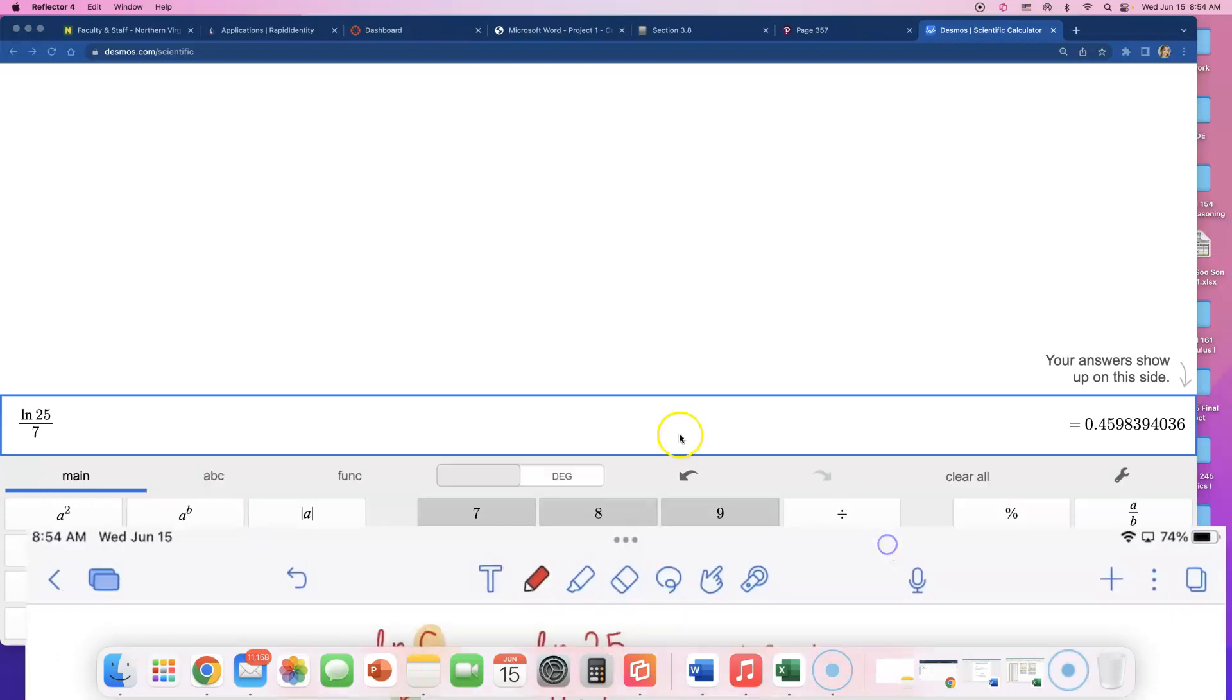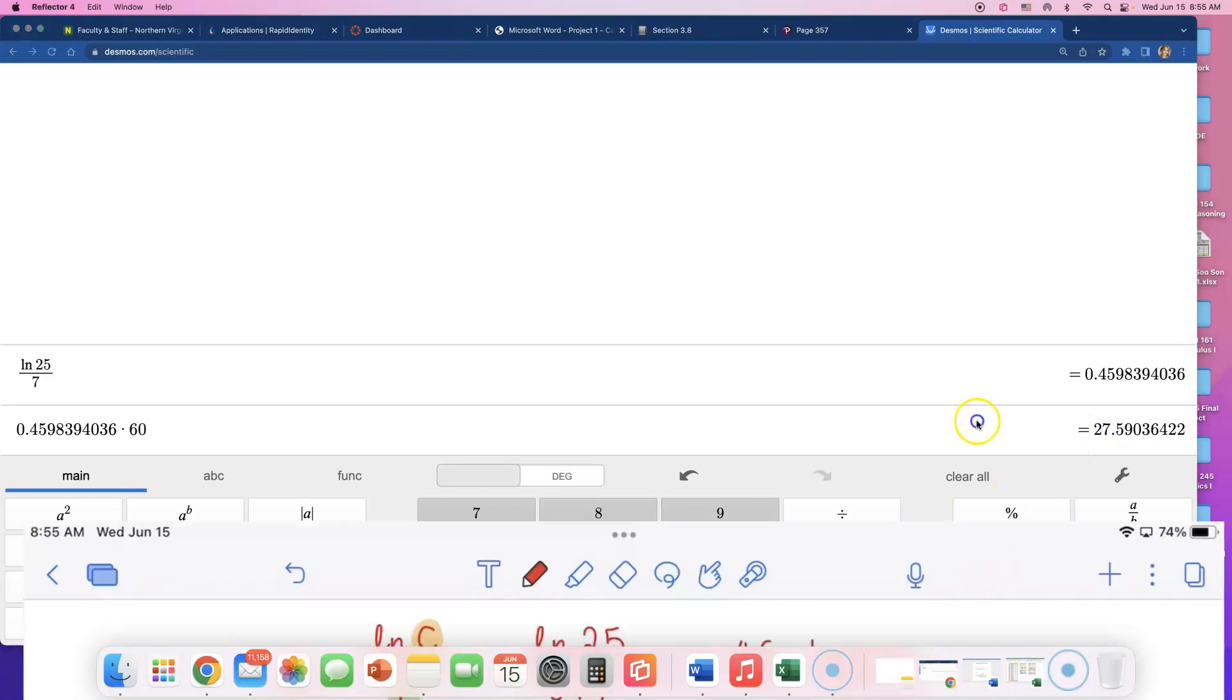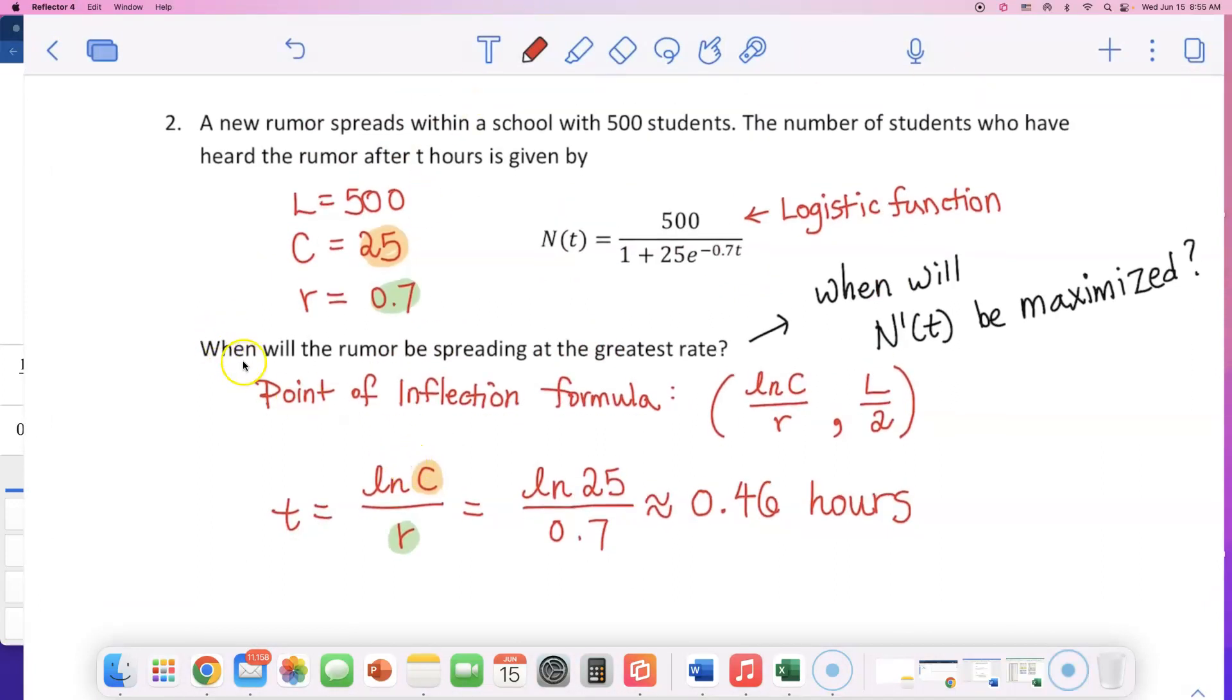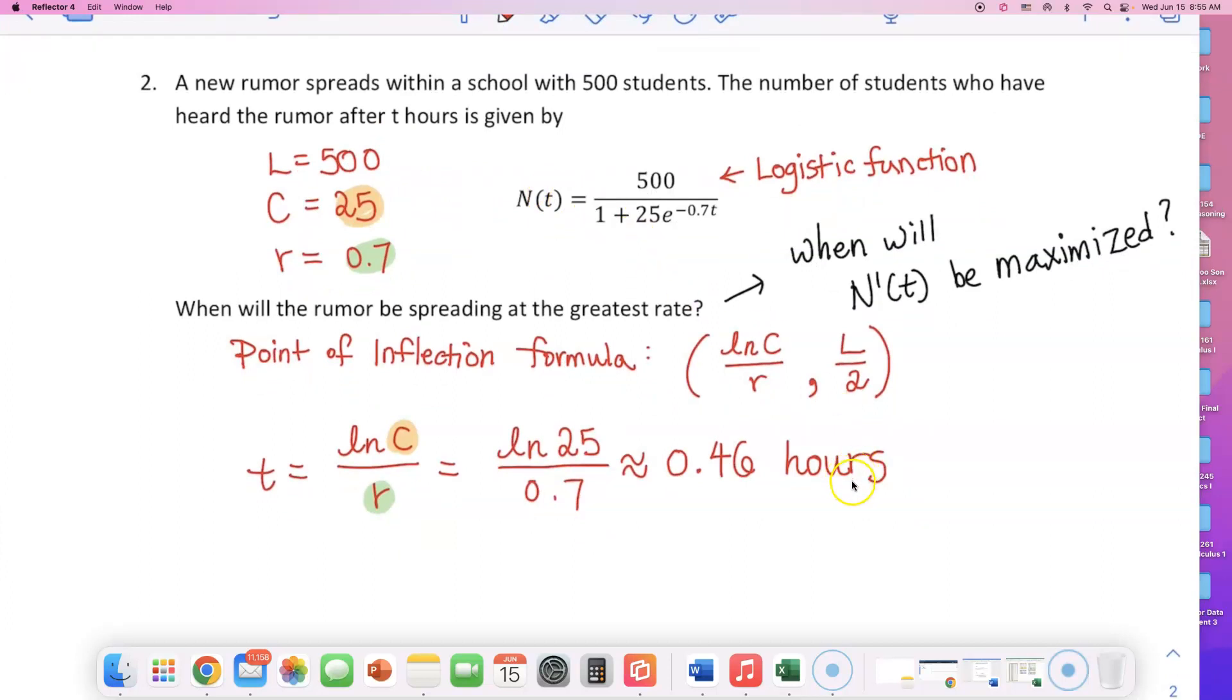0.46 hours. Now, how many minutes is that? Just out of curiosity. If I take this and multiply this by 60 minutes in an hour, about 27 minutes and 60 seconds or probably that's approximately 28 minutes, this rumor is spreading at the fastest rate. I think it's okay if you guys just want to leave it in hours. The unit is in hours. The question asks when will the rumor be spreading at the greatest rate and this t was in hours, not in minutes. So I don't really need you to convert it into minutes unless you really want to.